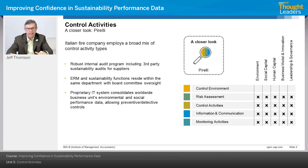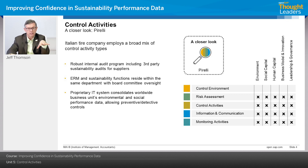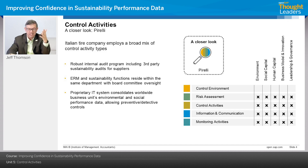Let's take a look at Pirelli Tires as a mini case study. Pirelli is an Italian tire company that employs a broad mix of different types of control activities, and the breadth, depth, and balance can only be determined by the organization. Pirelli is a nearly $7 billion operation as of 2016, a multinational tire manufacturer with 19 manufacturing sites in 13 countries and a sales presence in 160 countries. They have a robust internal audit program, including third-party assurance of sustainability information from suppliers.